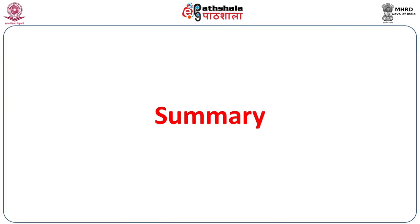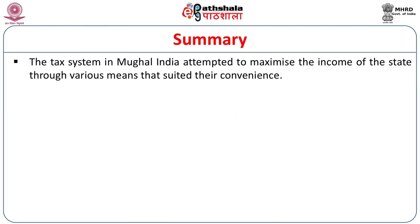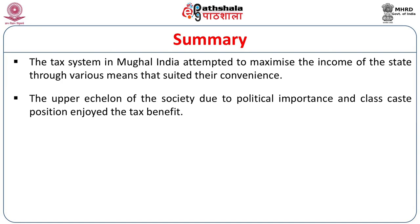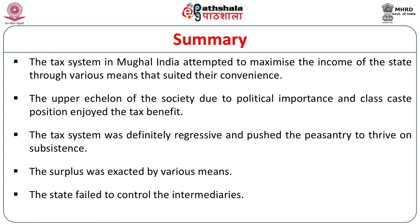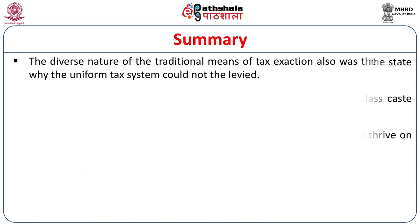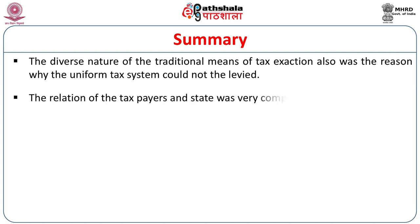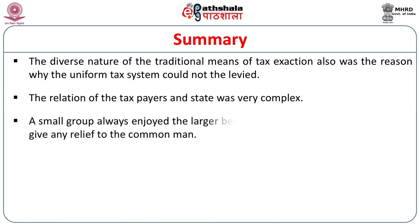Let us summarize what we have done in this module. We have grasped that the tax system in Mughal India attempted to maximize the income of the state through various means. The upper echelon of society, due to political importance and caste-class position, enjoyed the tax's benefits. The tax system was definitely regressive and pushed the peasantry to survive on subsistence. The surplus was exacted by various means, and the state failed to control the intermediaries. The diverse nature of traditional means of tax extraction also meant a uniform tax system could not be levied. The relation of the taxpayers and the state was very complex — a small group always enjoyed the larger benefit of the tax system, which failed to give any relief to the common man.